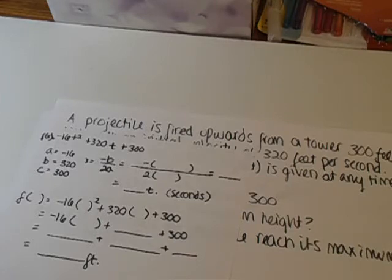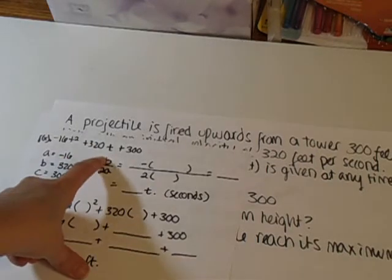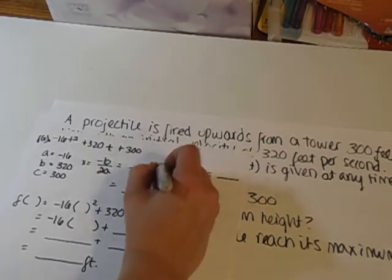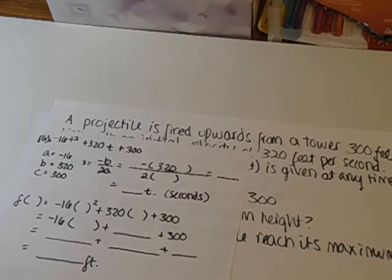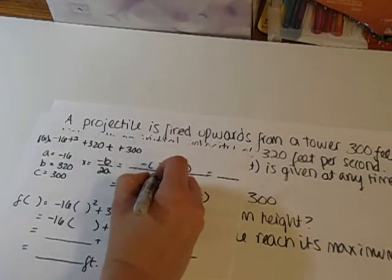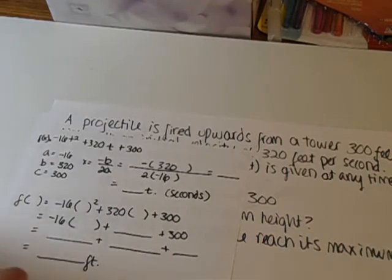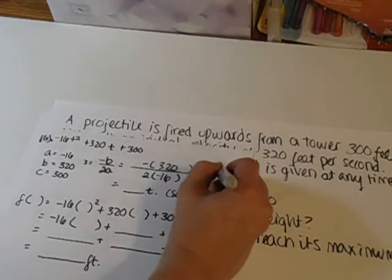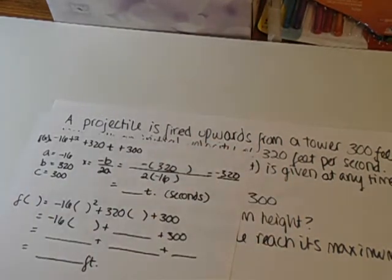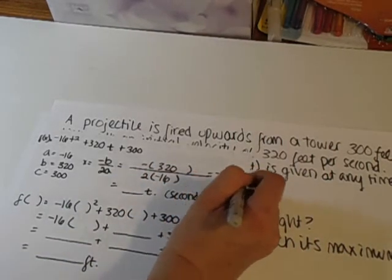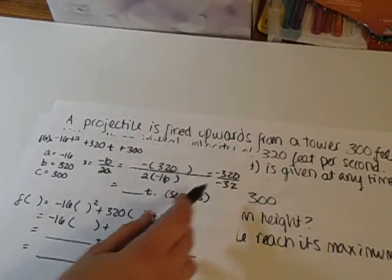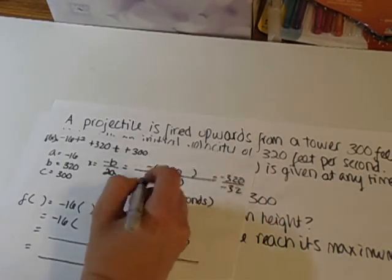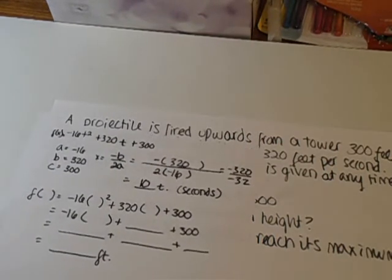You plug in 320 for b. Based on the fact that it's negative, put parentheses on it so it won't confuse you. Then put negative 16 as the a. You carry that over: negative 320 over negative 32. Negative over negative equals a positive, which simplifies to 10 seconds.